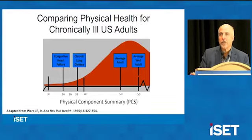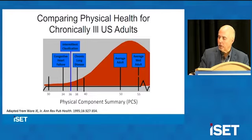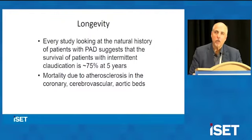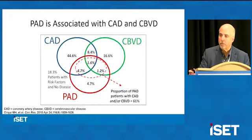I don't want us to forget that this is not only about reducing mortality rates. When you look at the physical conditioning of patients with PAD, they are dramatically impaired — compare them to class 3 congestive heart failure or chronic obstructive pulmonary disease. Patients with intermittent claudication, the most common symptom of peripheral artery disease, are as disabled as those conditions. Every study on the natural history of PAD suggests survival rates with claudication are only about 75% at 5 years, with most deaths caused by atherosclerosis in other vascular beds.